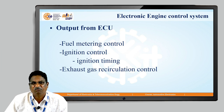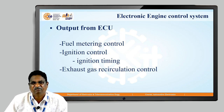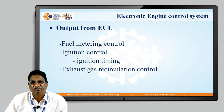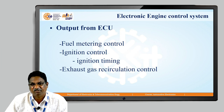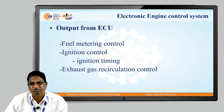The outputs we get from the ECU are: fuel metering control — indicating how much amount of fuel is present; ignition timing information — the ECU initiates the spark in the cylinder at a particular instant only; and exhaust gas recirculation control — once the air-fuel mixture is burnt inside the cylinder, whatever burnt gases remain inside the cylinder have to be taken out. That is the duty of the ECU.